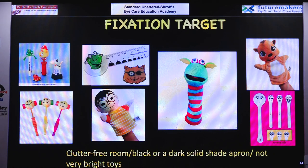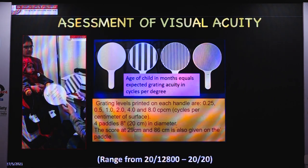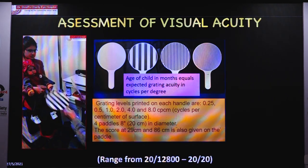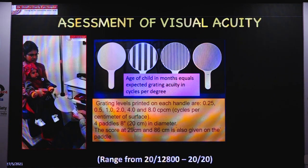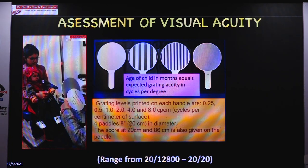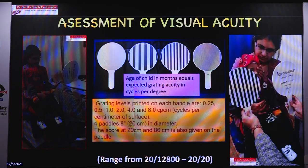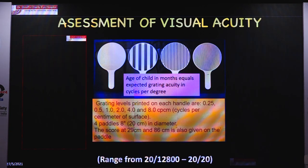Assessment of visual acuity can be done using charts like Lea Paddles, Teller acuity, Cardiff — preferential looking-based — or OKN in very poorly responsive children to elicit nystagmus and tell us about visual prognosis. Sweep VEP is very useful as it performs within a span of 10 seconds with multiple readings taken — important given these children's short attention span. The Lea Paddle has one diffuse background and one striped background; the width of stripes increases and you assess where the child focuses. Age in months equals expected grating acuity in cycles per degree.